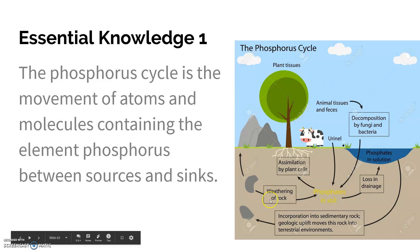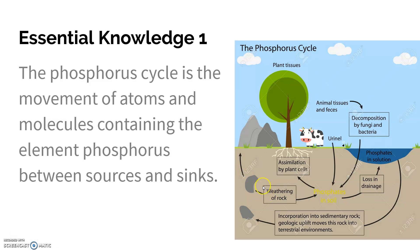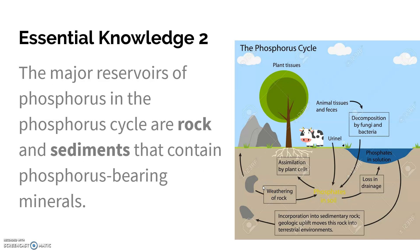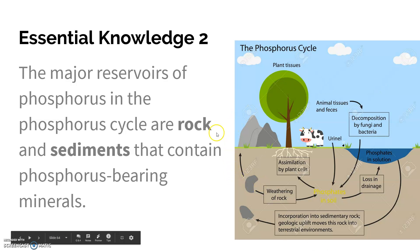The newer thing with the phosphorus cycle is that there is no atmospheric component. It's all in the rocks and the water, so it's a very slow-moving cycle.